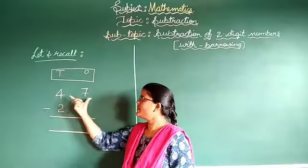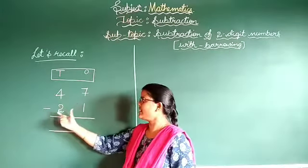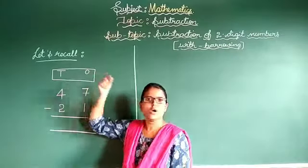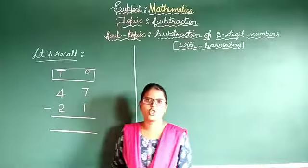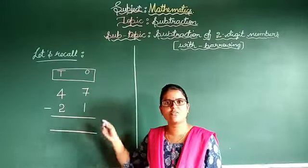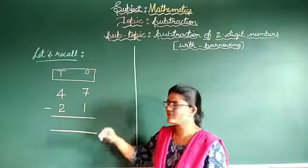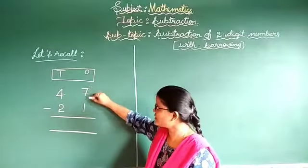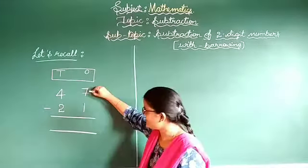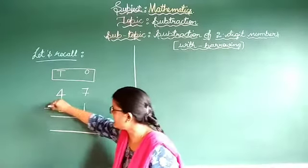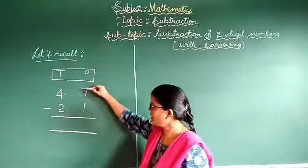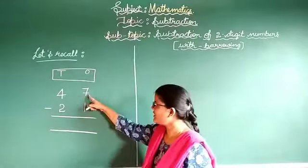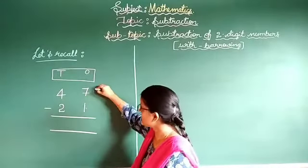See here — the numbers 47 and 21 are both arranged under the ones column and tens column. Now let us start solving. First, we subtract the ones place numbers: 7 minus 1. Draw 7 lines.